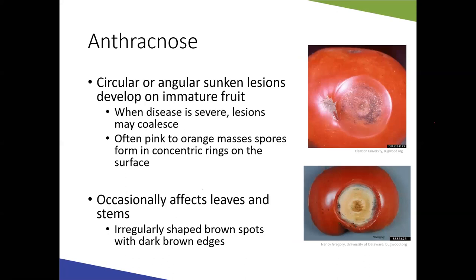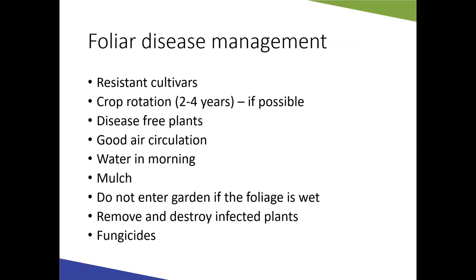Anthracnose is most commonly seen on fruit. It causes circular, sunken lesions that often develop a black fuzzy growth which progresses to orange or pink coloring — those are the fungal structures producing spores. It can occasionally appear on leaves, but fruit infection is the primary concern.